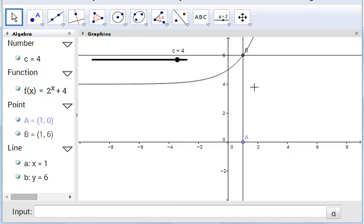This is a linear translation. As we increase c, the graph shifts upwards by the same amount.